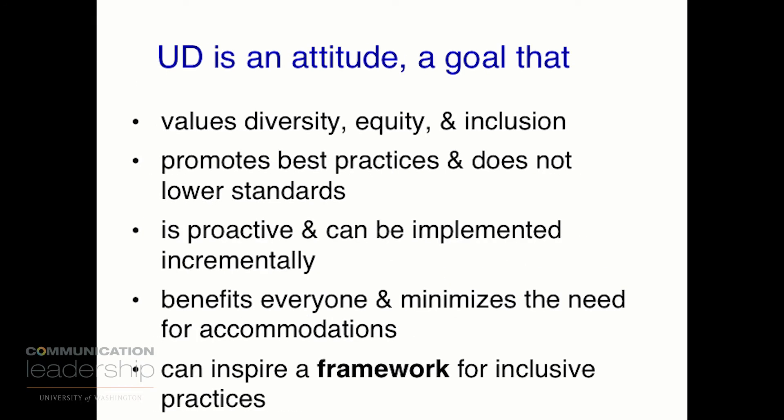So what universal design is, as I'm talking about it here: first of all, it is an attitude that you're just thinking inclusively. You're not saying things like 'most people want' — next time you catch yourself saying 'most people want,' say instead 'people want' and ask what is the variety of things that they want. It values diversity — we actually embrace diversity. I'm looking for faculty members to say, 'I have a student who's blind in my art history class — we're going to learn so much from this person. I've never thought about how you experience art history if you aren't able to see the images.' Universal design values diversity, equity, and inclusion. It promotes best practices. Does not lower standards. Is proactive and can be implemented incrementally. Benefits everybody. And also minimizes the need for accommodations. And it can inspire a framework for inclusive practices.